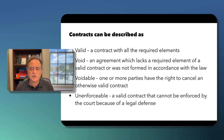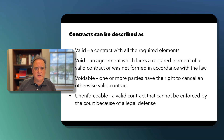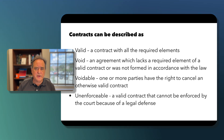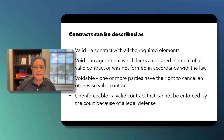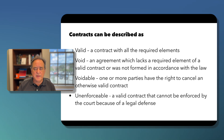An unenforceable contract is an otherwise valid contract that cannot be enforced by the court because of a legal defense. The classic case is when the statute of limitations is involved. The law gives you a time period — generally three or four years — in which to bring a claim for breach of contract. If you bring the claim more than four years after the breach, you cannot enforce it.